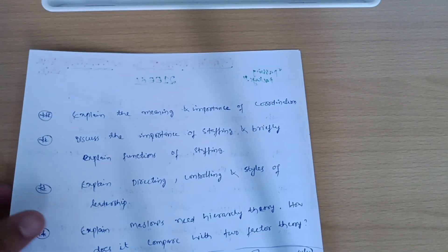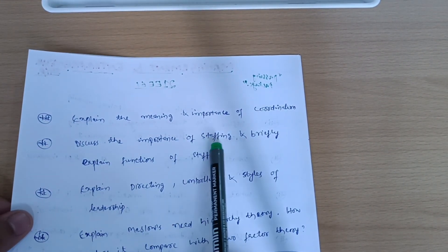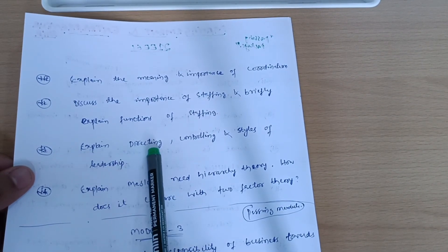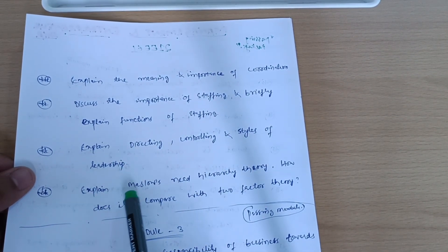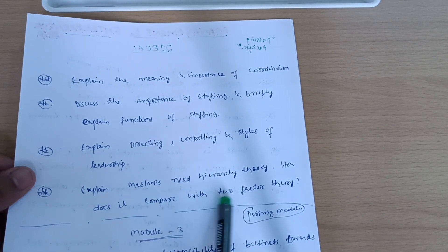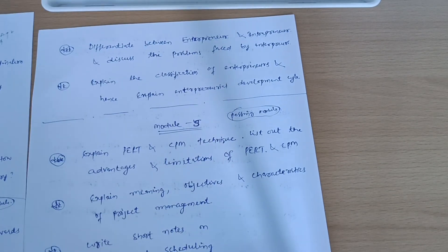Next questions from Module 2 are: explain the meaning and importance of coordination. Discuss the importance of staffing, directing, controlling and styles of leadership. Expand Maslow's need hierarchy theory. How does it compare with two-factor theory? So these are the portions from Module 2.